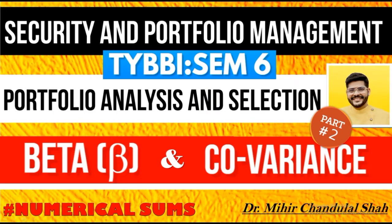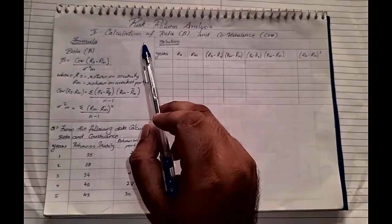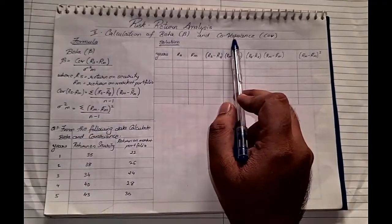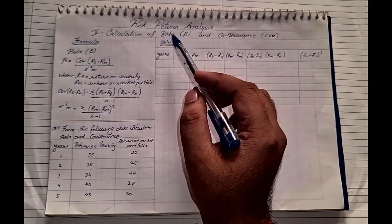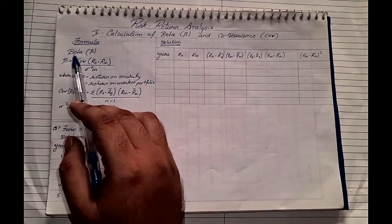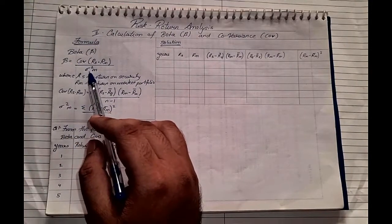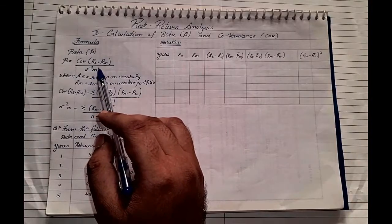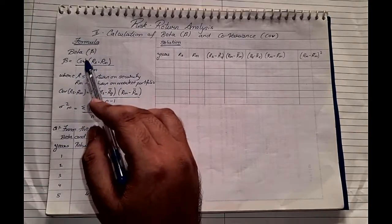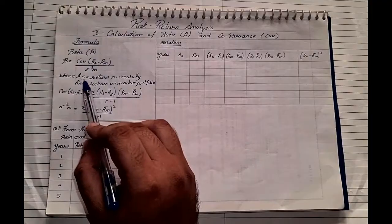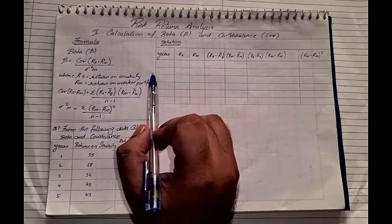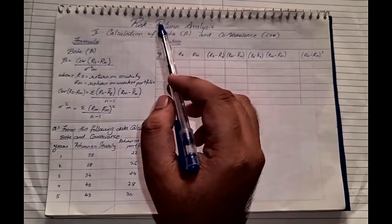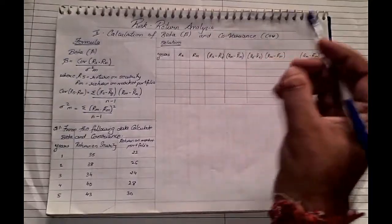So let us see with the numerical problems. Now let us see how to calculate beta and covariance under the chapter risk and return analysis. Before solving, let us see the formulas. The beta formula is: covariance upon standard deviation squared of the market, where covariance is rs into rm — rs stands for return on security, rm stands for return on market portfolio. Always remember, whenever you're calculating beta and covariance, you are comparing the security return with the market return.